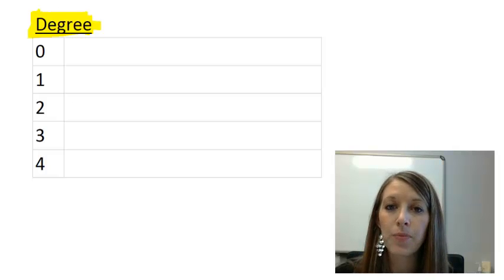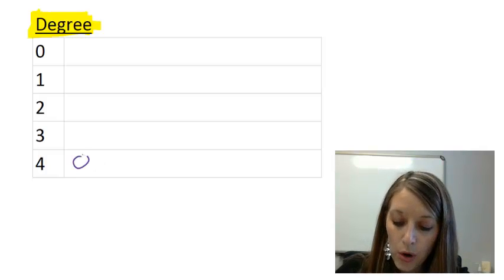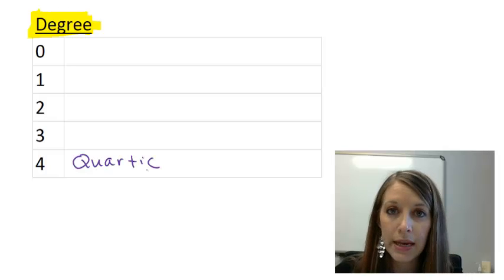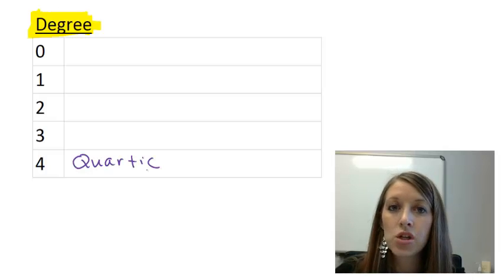And actually, I might start with the last one. If something is a degree 4 polynomial, then it is called a quartic polynomial, which makes sense. There's four quarters in a dollar, so it makes sense that a degree 4 is a quartic polynomial.